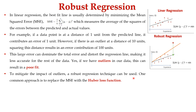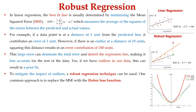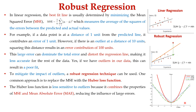To mitigate the impact of outliers, robust regression techniques can be used. One common approach is to replace MSE with the Huber loss function. The diagram shows that mean square error (red line) has a quadratic increase in error, making it highly sensitive to outliers. Whereas mean absolute error (blue dotted line) and the Huber loss function (green dotted line) exhibit linear and hybrid behaviors respectively, which are more robust to outliers.